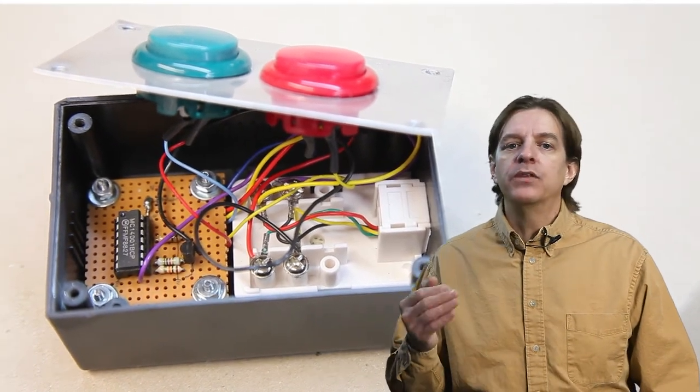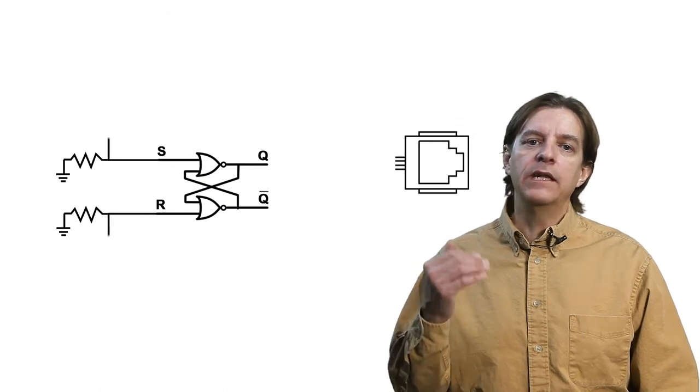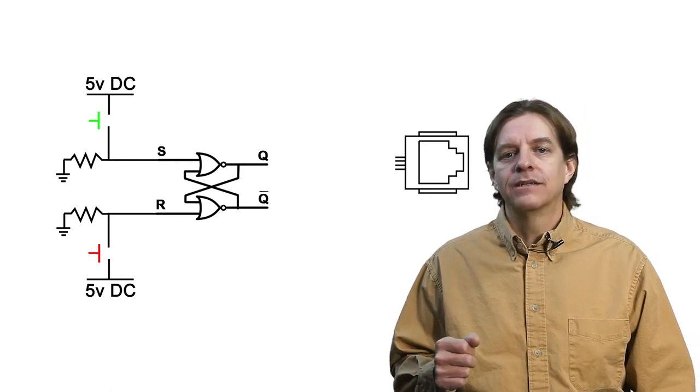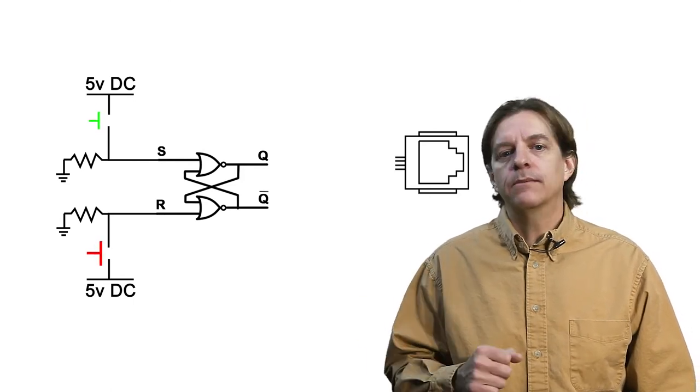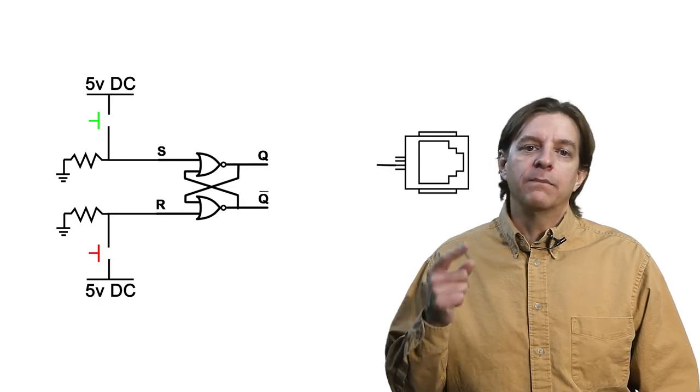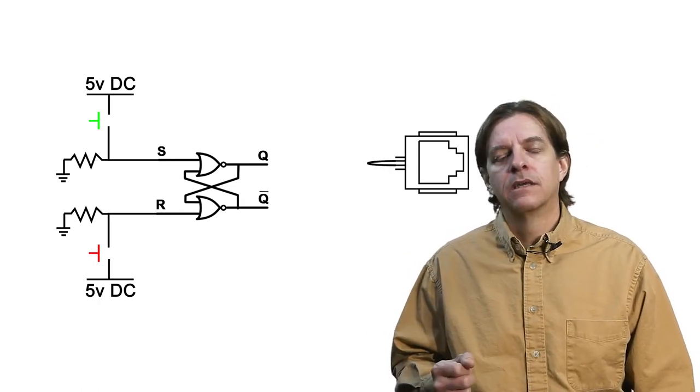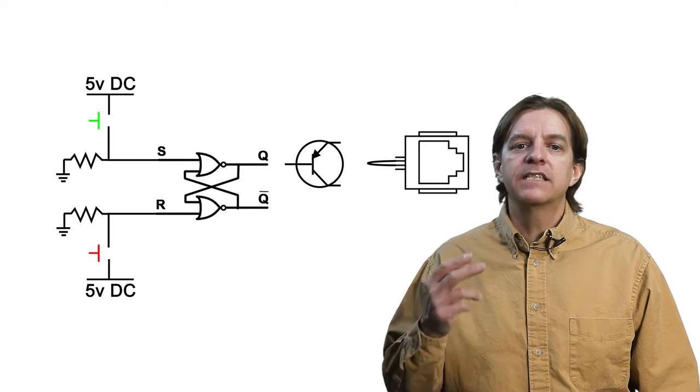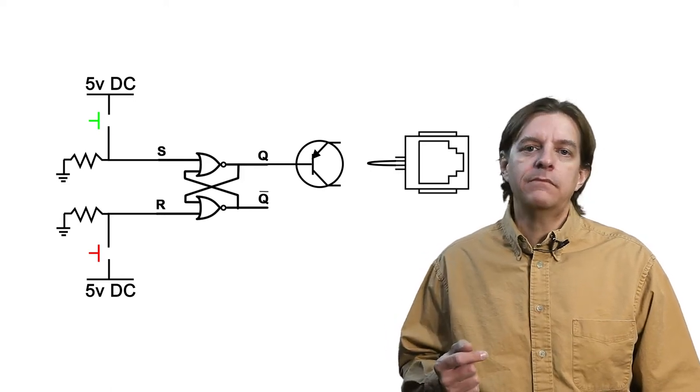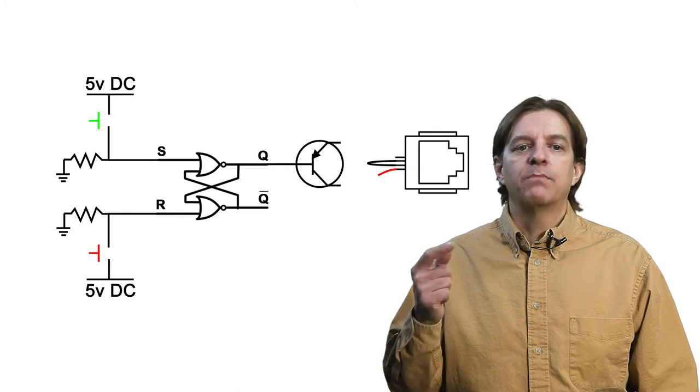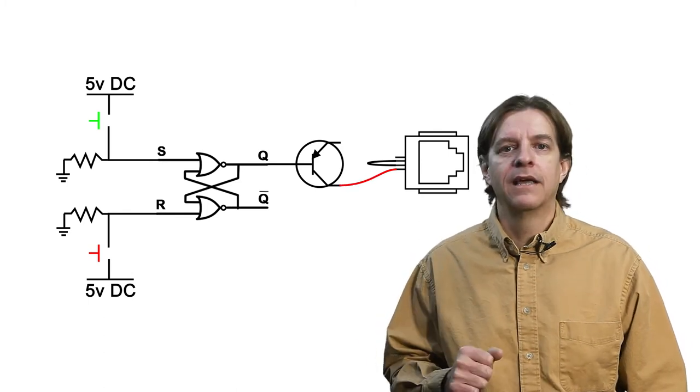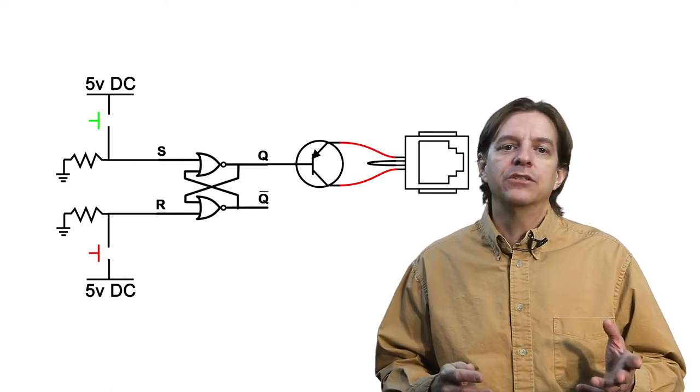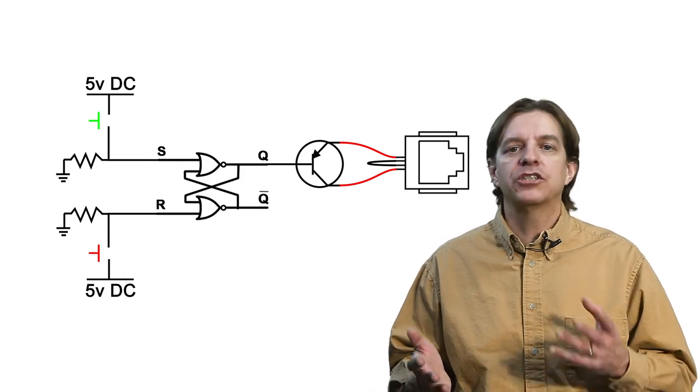The switches are wired with pull-down resistors. This allows the inputs to be normally low, and go high when the button is pressed. The green button connects to the set input. The red button connects to the reset input. The negative input to the power switch tail goes to the negative power connector. Since I'm switching the positive side of the power, I'm using a PNP transistor. Its base connects to the flip-flop's Q output. The power switch tail's positive input goes to the transistor's collector. And finally, the transistor's emitter connects to the positive power connector. In this configuration, the transistor acts as the switch for the power switch tail's power.